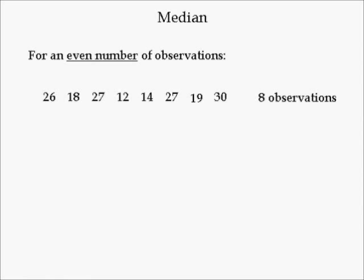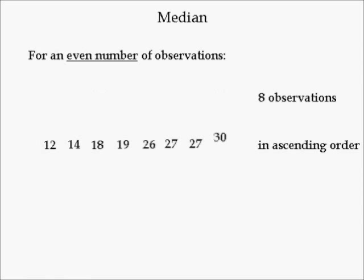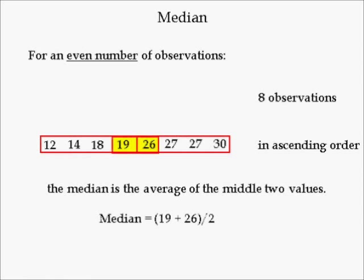To compute the median for an even number of observations — say 8 — again put the data in ascending order, then pick the two middle numbers. Here the two middle numbers are 19 and 26. The median is the average of the two. When there's an odd number of observations, the median is a member of that variable. When there's an even number, the median is not in the actual data. Here the median is 22.5. Now, 50% of the observations are less than 22.5, and 50% are larger than 22.5. When you have an even number of observations, the percentages are always 50%.